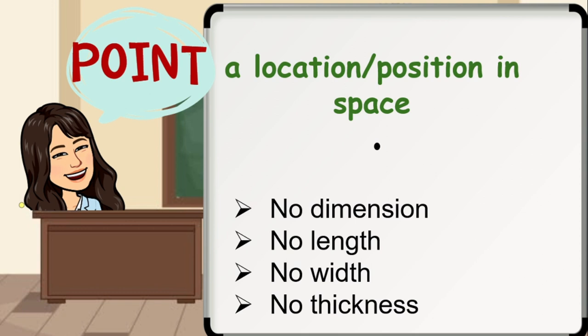All other geometric figures are made up of a collection of points. As described, it has no dimension, no length, no width, no thickness, and it does not occupy an area. So basically, it can be merely represented by a dot as shown here.